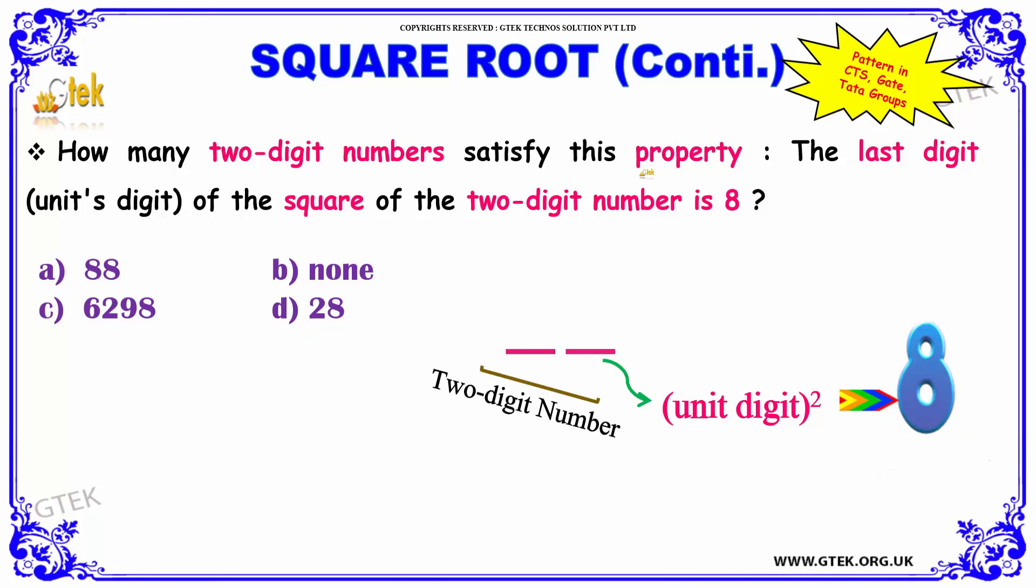How many two-digit numbers satisfy the property that the last digit, your unit digit, will be the square of two-digit number and it will be 8?